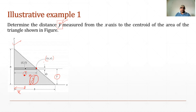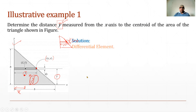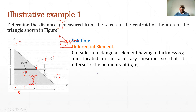So we have this triangle and we need to find y-bar. We choose a rectangular strip with differential thickness dy and dimension x. This strip cuts the triangle boundary at coordinate (x, y). We consider a rectangular element having thickness dy, located at an arbitrary position so that it intersects the boundary at (x, y).